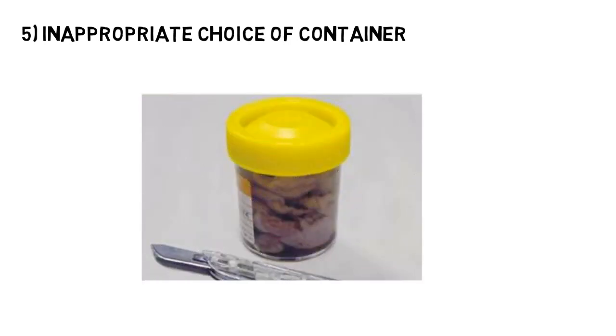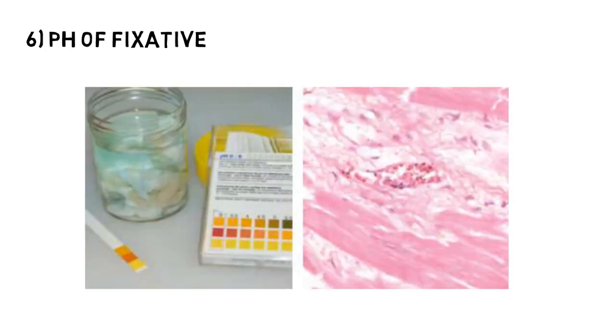Number five, an inappropriate choice of container size can lead to squashing of tissue and it should be rejected. Number six, check the pH of fixative. For example, if formalin — the most commonly used fixative — is used at an acidic pH, it rapidly produces formalin pigments by reacting with hemoglobin. So bear in mind, if the pH of the fixative is disturbed, it should be rejected.